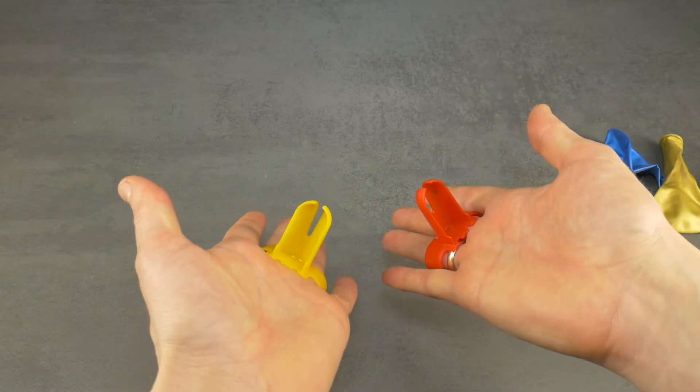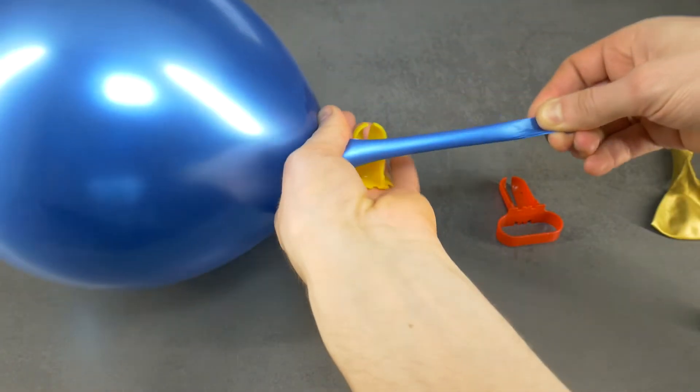You put the tie tool on two fingers of your hand, and then wrap the balloon rubber around the tie tool.